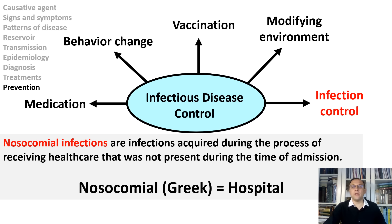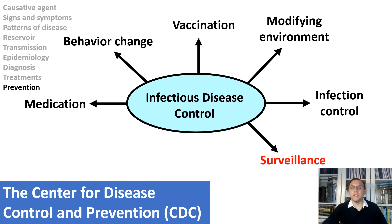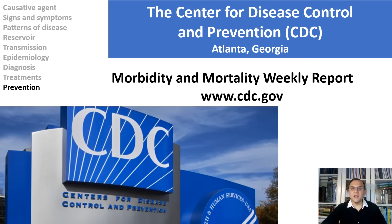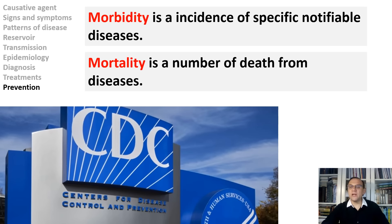The infection control officer should periodically examine hospital equipment to determine the extent of microbial contamination, taking samples from tubing, catheters, respirator reservoirs, and other equipment. Infectious disease surveillance is an important epidemiological tool to monitor disease burden, identify outbreaks, and find new pathogens. The CDC — the Center for Disease Control and Prevention, located in Atlanta, Georgia — is the central source of epidemiological information in the United States. The CDC issues the Morbidity and Mortality Weekly Report, which contains data on the incidence of specific notifiable diseases and the number of deaths from diseases.